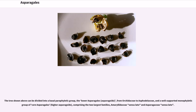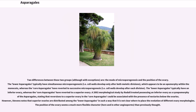The tree can be divided into a basal paraphyletic group, the lower Asparagales or asparagoids, from Orchidaceae to Asphodelaceae, and a well-supported monophyletic group of core Asparagales or higher asparagoids, comprising the two largest families — Amaryllidaceae sensu lato and Asparagaceae sensu lato. Two differences between these two groups, although with exceptions, are the mode of microsporogenesis and the position of the ovary. The lower Asparagales typically have simultaneous microsporogenesis, whereas the core Asparagales have reverted to successive microsporogenesis. The lower Asparagales typically have an inferior ovary, whereas the core Asparagales have reverted to a superior ovary.